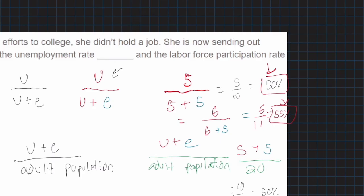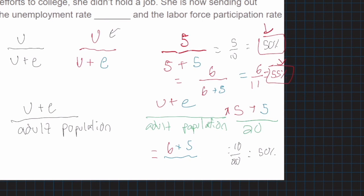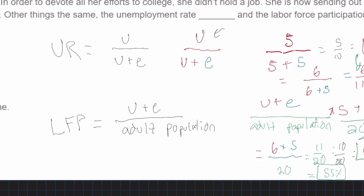For the labor force participation rate: U plus E increases to 6 plus 5. Does the adult population change? Did anyone have a birthday? No. Did anyone die? No. So the adult population stays at 20. This gives us 11 over 20, which is also about 55%. So comparing before and after: unemployment rate increased and labor force participation rate also increased.